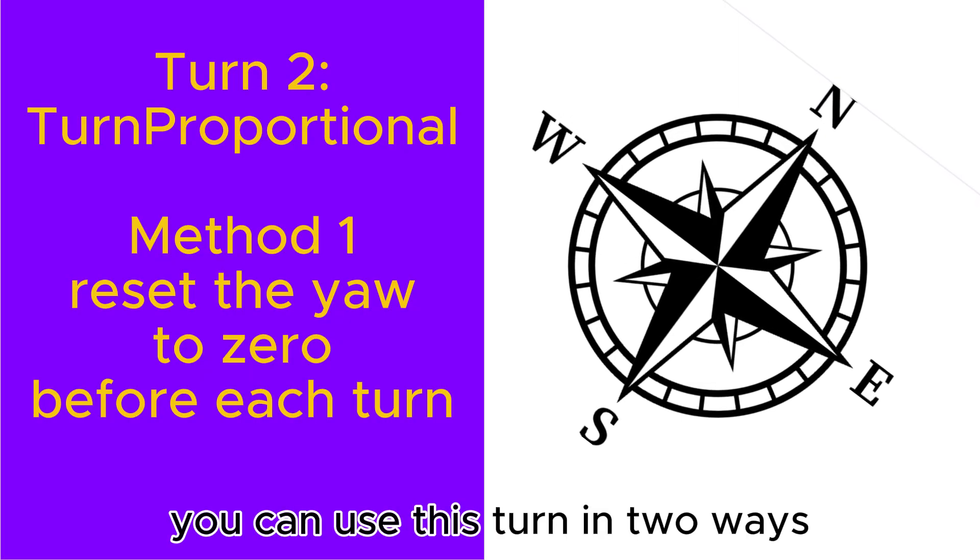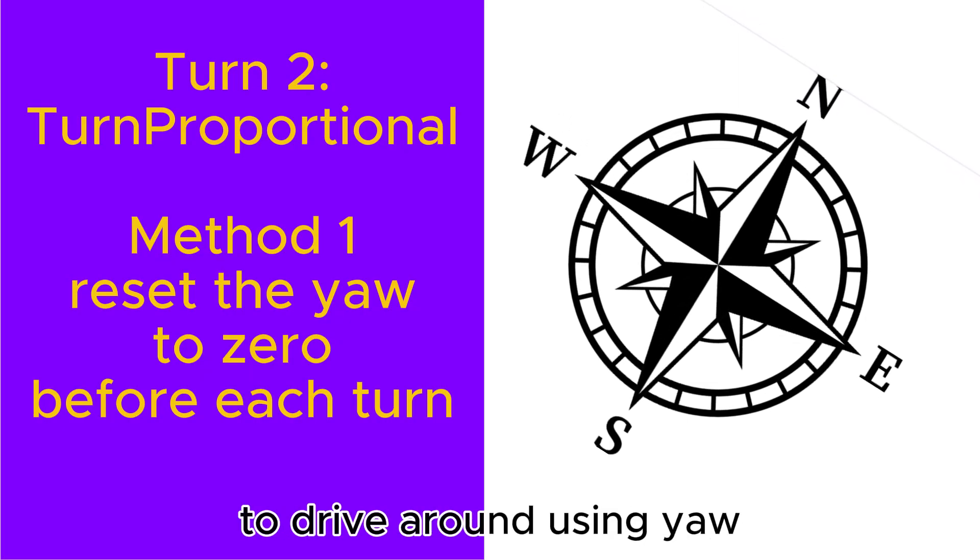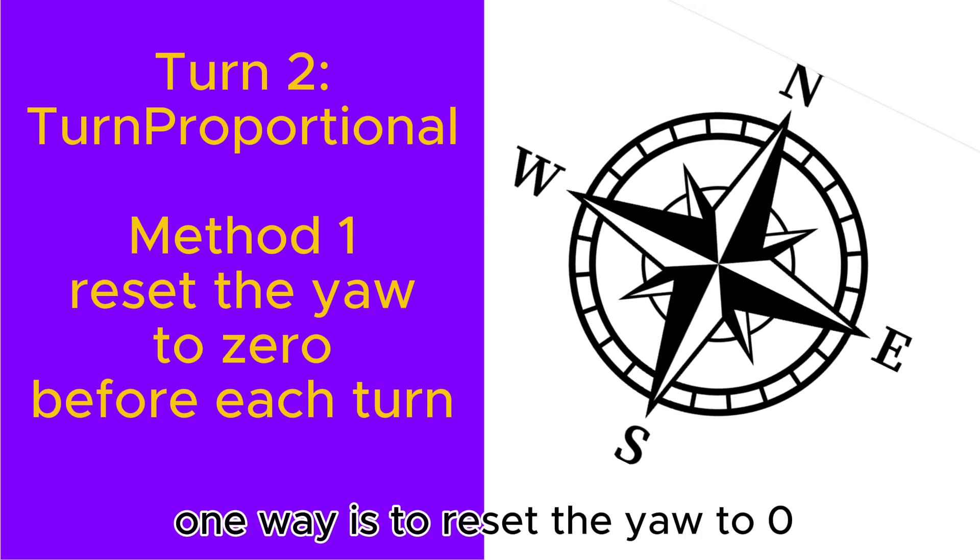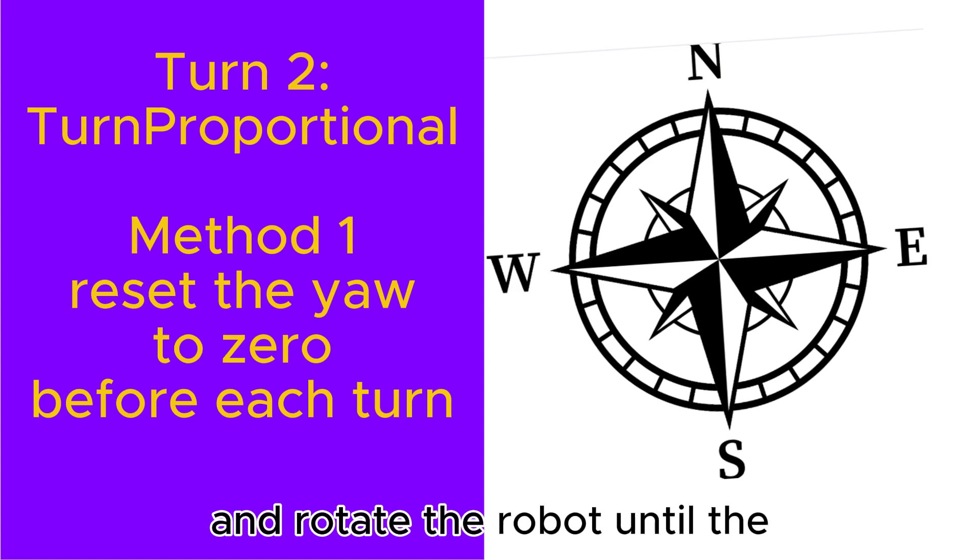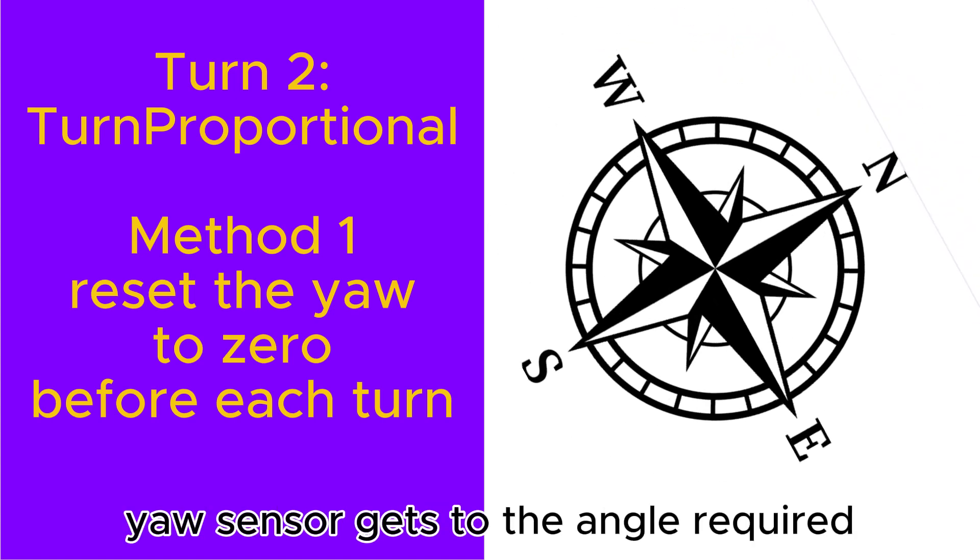You can use this turn in two ways to drive around using yaw. One way is to reset the yaw to zero before each turn and rotate the robot until the yaw sensor gets to the angle required.